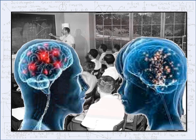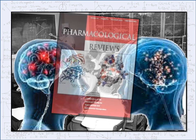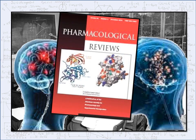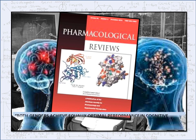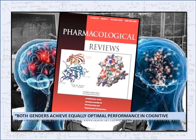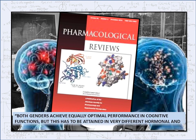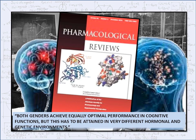For example, a conclusion in a well-researched article in the Pharmacological Review's journal is that both genders strive to achieve equally optimal performance in cognitive function, but this has to be attained in very different hormonal and genetic environments.